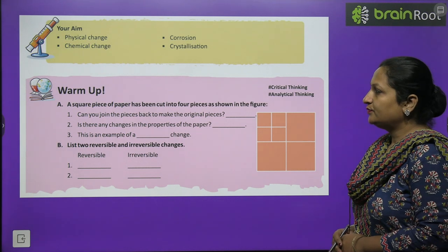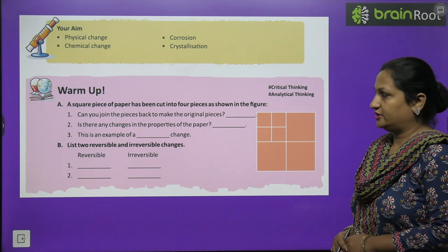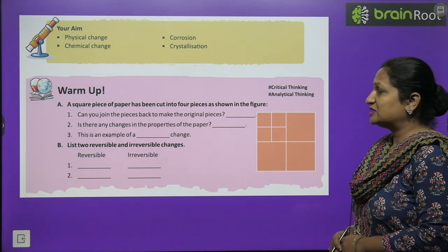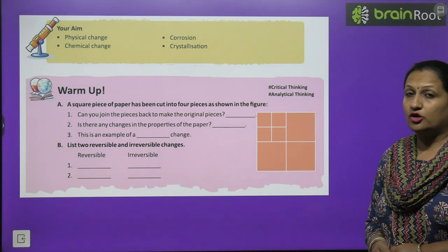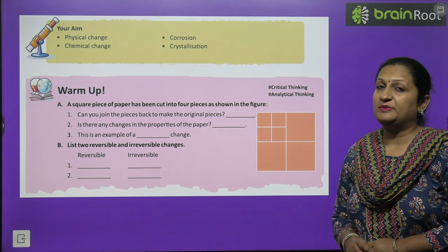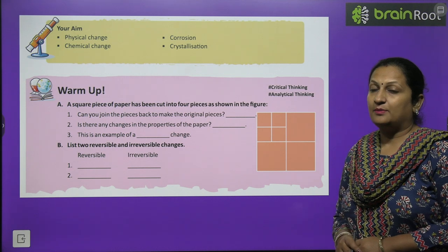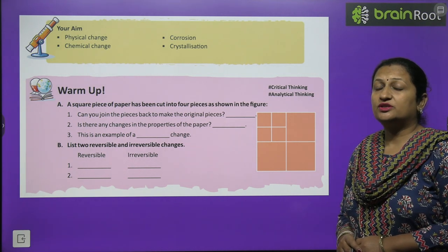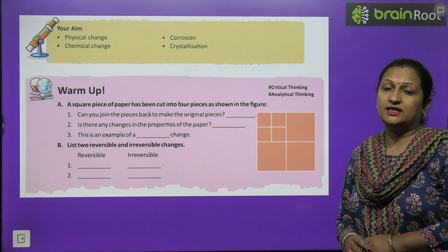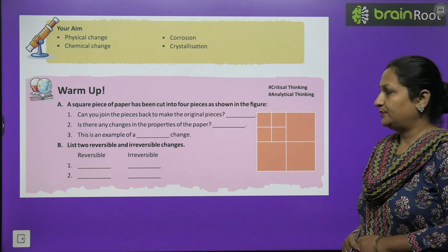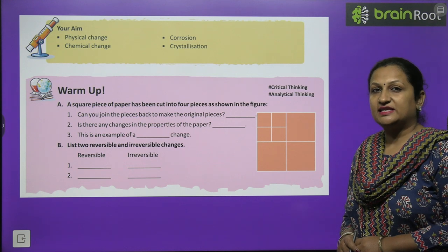Have a look at the warm-up activity, children. A square piece of paper has been cut into four pieces. Can you join the pieces back to make the original piece? Yes, you can join them, but it won't be exactly like the original. However, the properties of the paper remain the same. This is an example of a physical change.